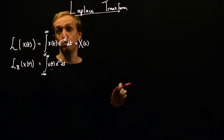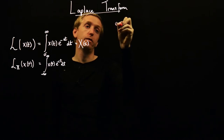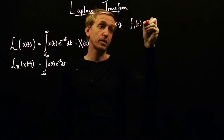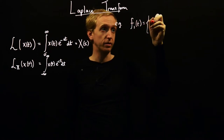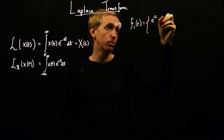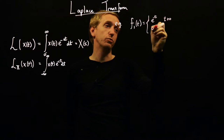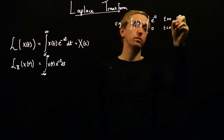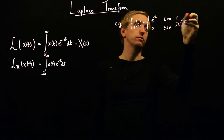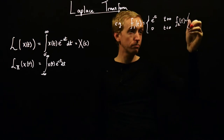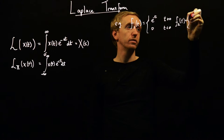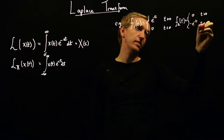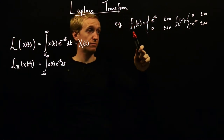Why don't we just do some examples to begin with? So let's study these two functions. f1(t) is going to be the function equal to e to the minus t for t greater than 0, and equal to 0 otherwise. And then f2(t) is going to be the opposite: 0 for t greater than 0, and minus e to the minus t for t less than or equal to 0.